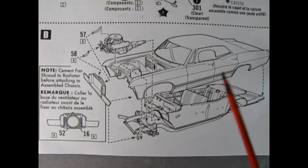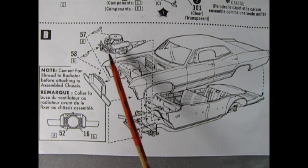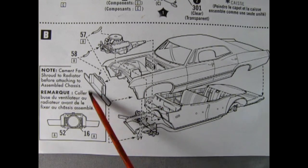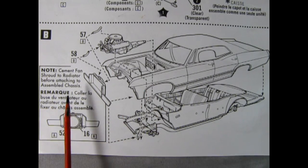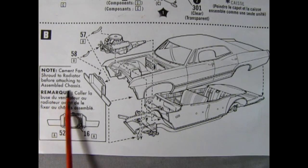In step B, we add the body to the chassis and frame. Then we drop in our engine, install the lower and upper radiator hoses to the radiator shroud and down here there is a note, cement fan shroud to radiator before attaching to the new assembled chassis.